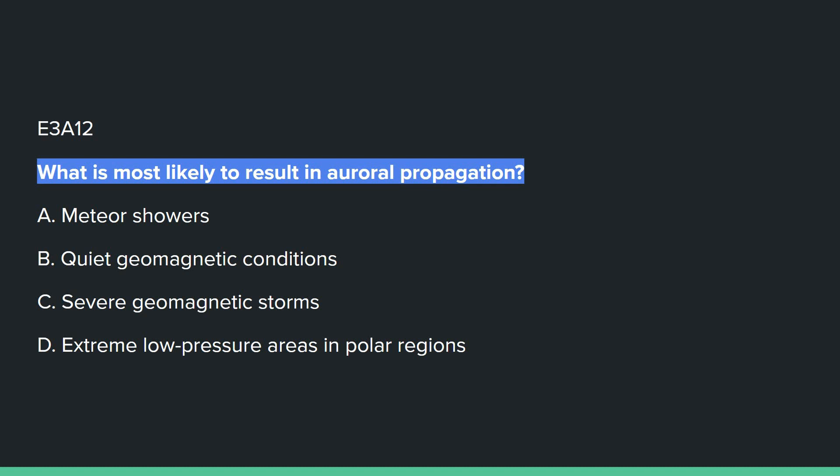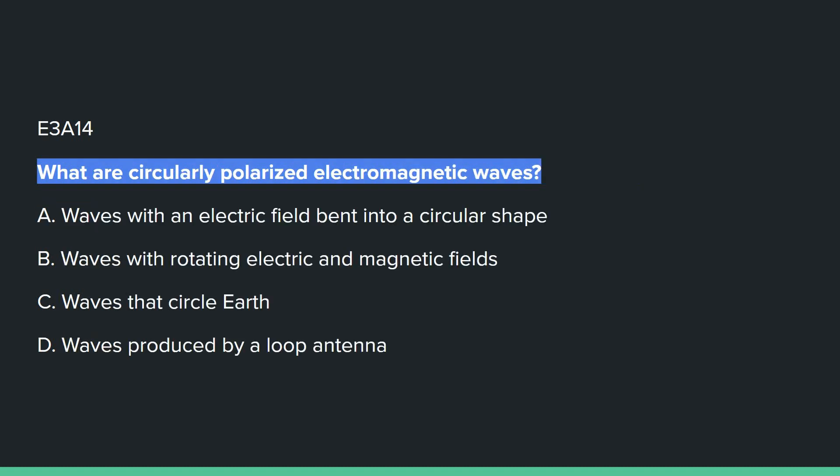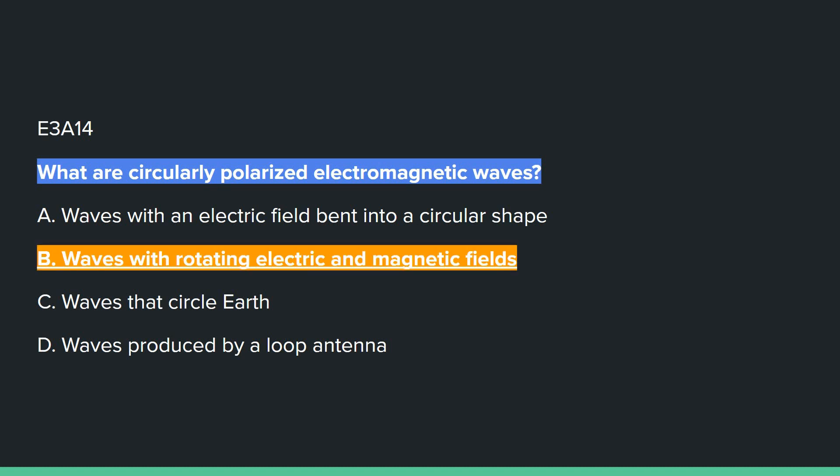E3A12: What is most likely to result in auroral propagation? C: severe magnetic storms. E3A13: Which of these emission modes is best for auroral propagation? A: CW. E3A14: What are circularly polarized electromagnetic waves? B: waves with rotating electric and magnetic fields.